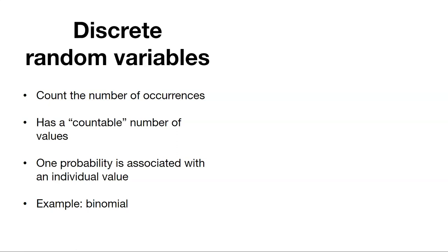And so when we look at variables, they could be either discrete or continuous. Discrete random variables count the number of occurrences, and they have numbers associated with them. This is an example like the coin flipping example. We can count the number of heads that we encounter.